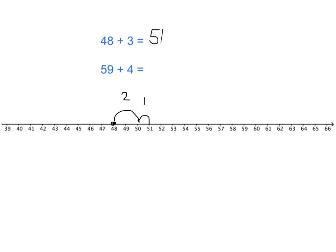For 59 plus 4, we start at 59. We jump to 60. Well, that's not much of a jump. It's just 1. We've got then 3 left to make a 4. So we take a jump of 3. And we end up at 63.